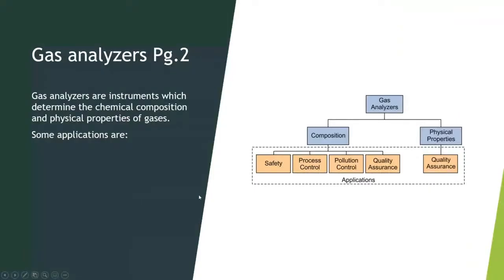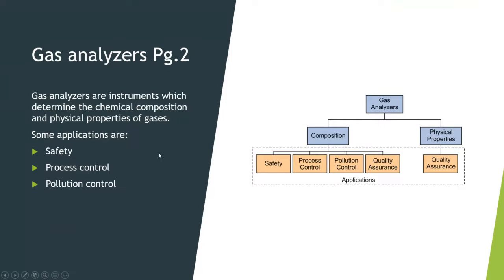Gas analyzers are instruments designed to determine the chemical composition and/or physical properties of gases for any number of different reasons. Applications include safety, process control, pollution control, and quality assurance. In this framework, we have composition of the analyte with those four applications, and then physical properties largely related to quality assurance.